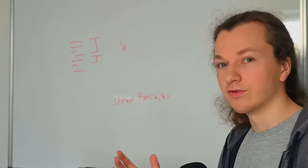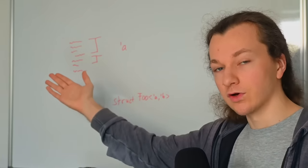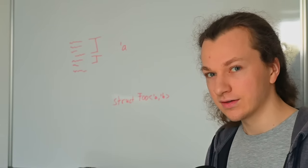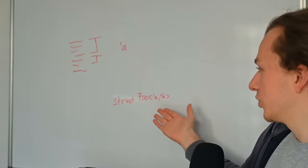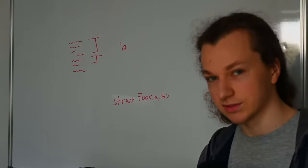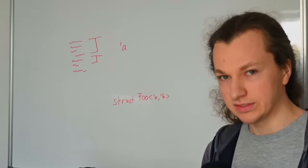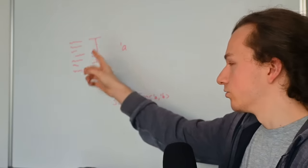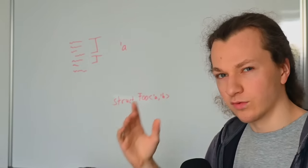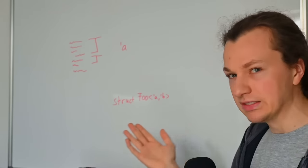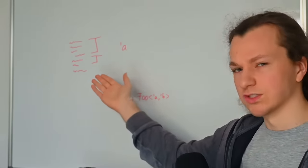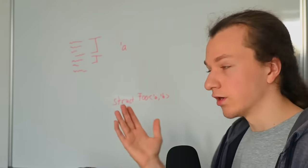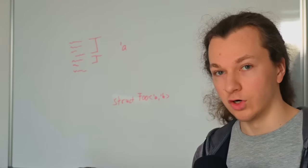Now we have a rough understanding of what lifetimes are — they're regions of code that certain references must be valid for. But let's say we come across a struct definition that uses two lifetimes. This is a bit weird, isn't it? We're looking at a definition of a data structure, but it uses lifetimes, which are regions of code. So if we want to understand what this definition actually means, do we have to think about regions of code? To me, that never made too much sense. We'll get to how I think of definitions like this later on in the video.